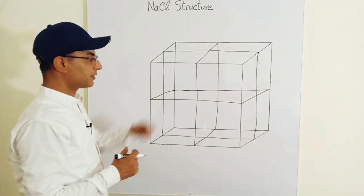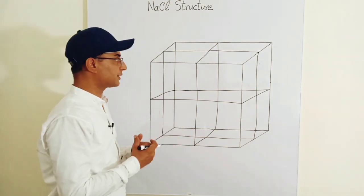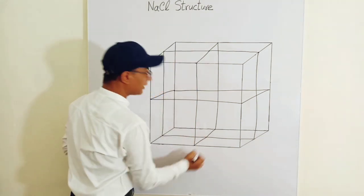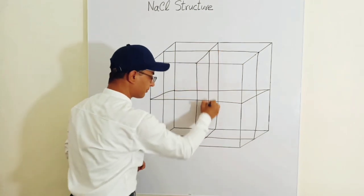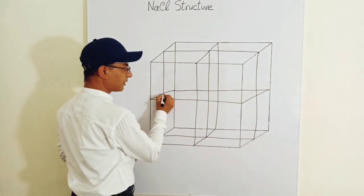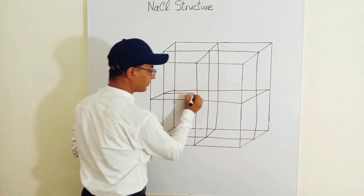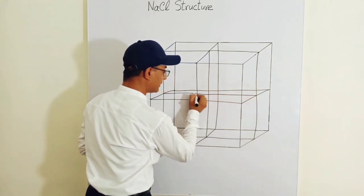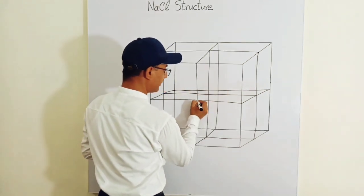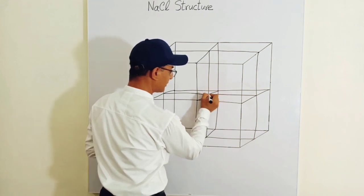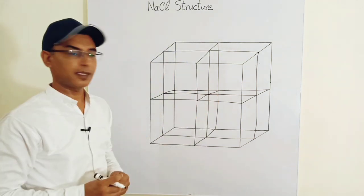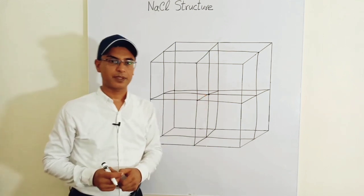Now this structure is not completed. What you have to do is locate the face center of the top and the bottom, which is over here. Join these two by a line. Then the left face center towards the right face center by a smooth line, and the back face center towards the front face center through this line. And there you go — you get a midpoint, which is known as the body center point of this lattice.